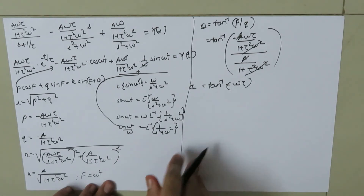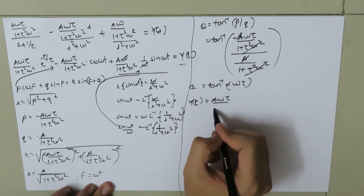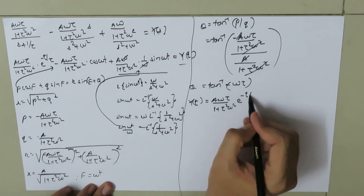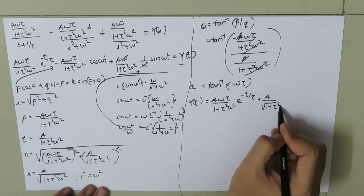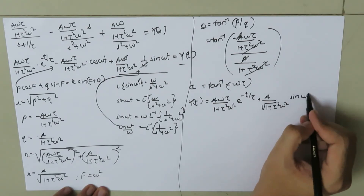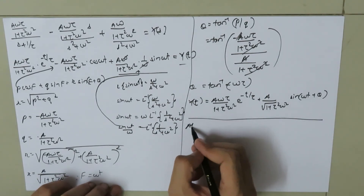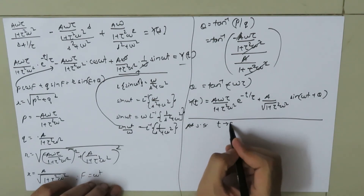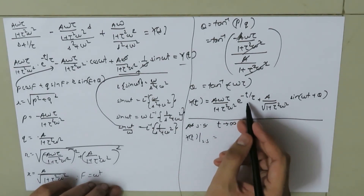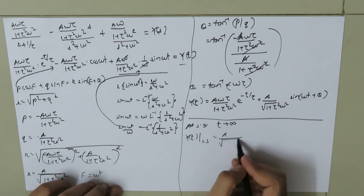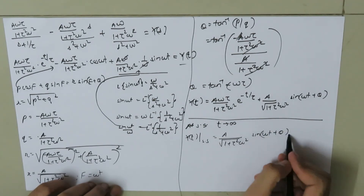Rewriting the final expression, y(t) equals [a·omega·tau / (1 plus tau squared·omega squared)]·e to the power negative t/tau plus [a / square root(1 plus tau squared·omega squared)]·sin(omega·t plus theta). At steady state, time tends to infinity, so e to the power negative infinity equals 0, giving y(t) at steady state equal to [a / square root(1 plus tau squared·omega squared)]·sin(omega·t plus theta).